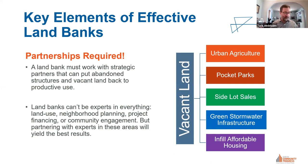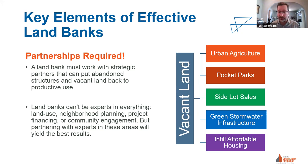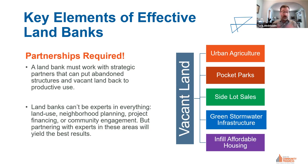Partnerships are required. A land bank is going to be working across a wide range of uses — from community gardens to large-scale urban farms, from pocket parks to green stormwater infrastructure for climate resiliency, expanding vacant lots to adjacent homeowners, and infill affordable housing. The land bank should be considered more as a broker of land on behalf of the public, ensuring predictable outcomes with responsible owners and goals that meet community priorities.